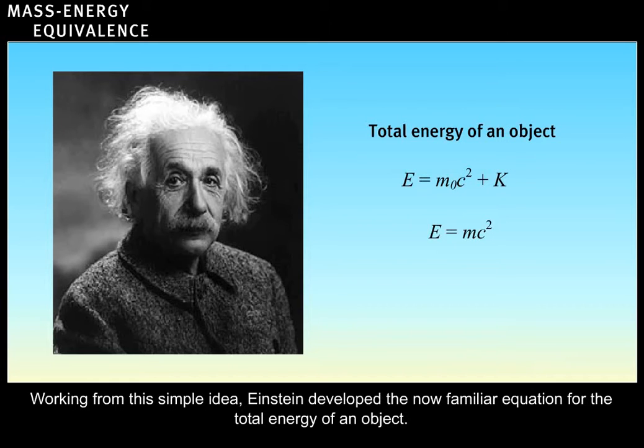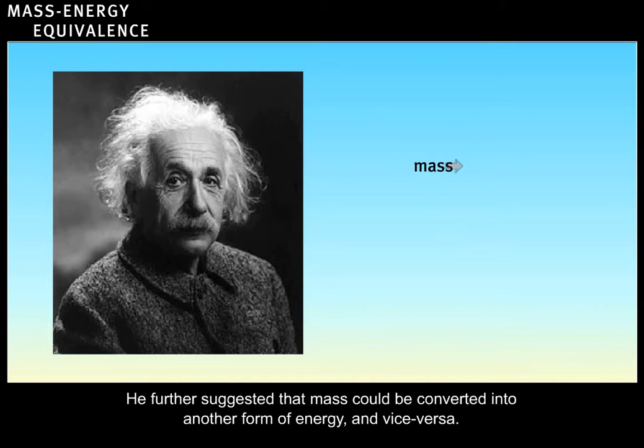Working from this simple idea, Einstein developed the now familiar equation for the total energy of an object. He further suggested that mass can be converted into another form of energy and vice versa.